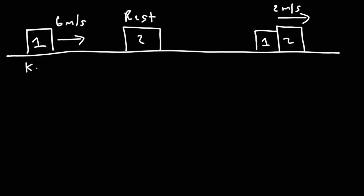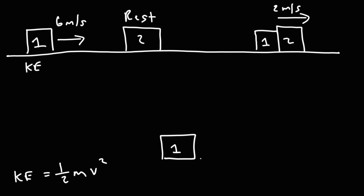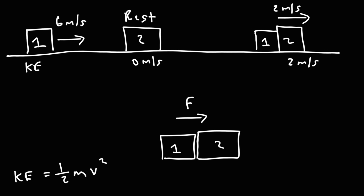Initially, block 1 has kinetic energy because it's in motion. Kinetic energy is basically — anytime an object is in motion, it has kinetic energy. Kinetic energy is equal to one-half times the mass times the square of the speed. When block 1 strikes block 2, block 1 is going to exert a force on block 2, causing block 2 to move from 0 to 2 meters per second. Because the velocity of block 2 increased, its kinetic energy increased.